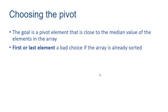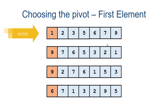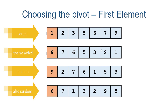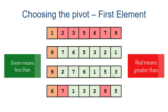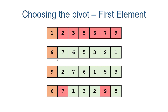The first or last element is a natural choice, but if the array is already sorted, that's typically a bad pick. Here we have four different arrangements and we've chosen the first element. In the first three cases, selecting the first element doesn't partition the array at all — everything is either greater or smaller than the partition. In the last case, six does a decent job with four smaller and two larger, which is good enough even if not ideal.